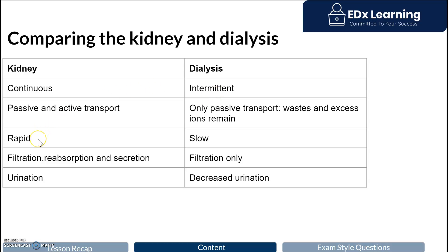The next most important point is that the normal glomerular filtration rate (GFR) is greater than 100 milliliters per minute per 1.73 cubic centimeters of kidney tissue. Compare that with dialysis, where it is less than 15, even at end-stage renal levels. When you put someone on dialysis, the GFR — which is how we actually define kidney function — does not improve substantially at all. So dialysis is a very slow process.